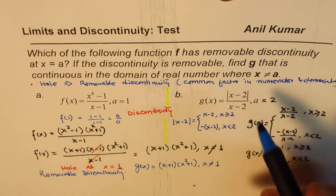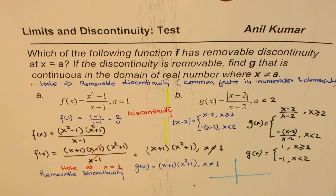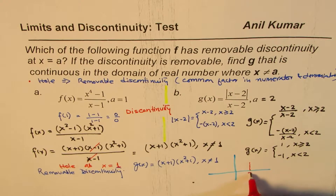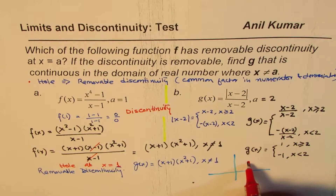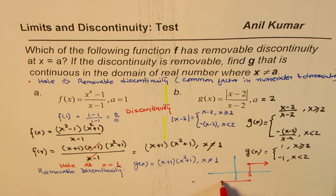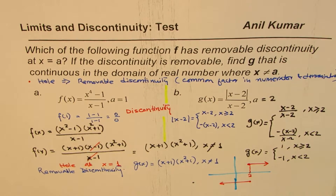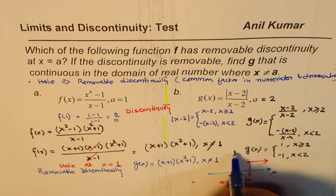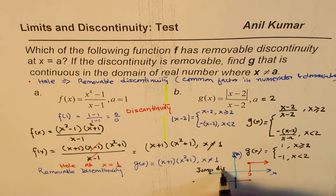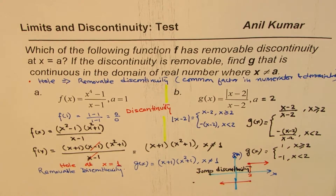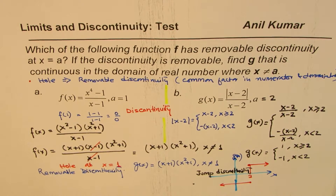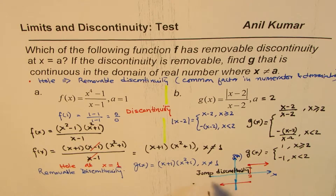If you sketch this function, at the point 2, if x is greater than 2, the function equals 1. If you're on the left side, it is minus 1. So it is either plus 1 or minus 1. The type of discontinuity here is a jump discontinuity. This discontinuity cannot be filled in — if you try to fill it in, it will fail the vertical line test. So in this case, it is not a removable discontinuity; it is a jump discontinuity.